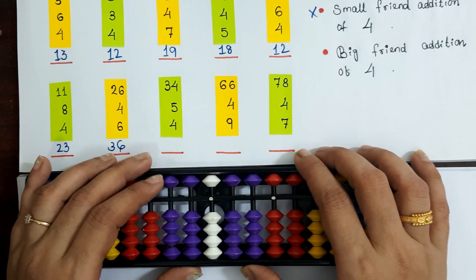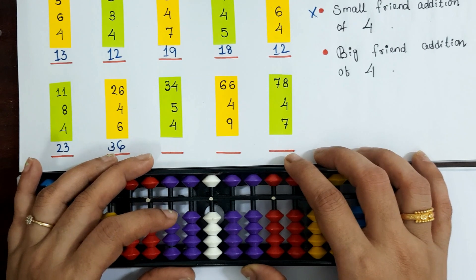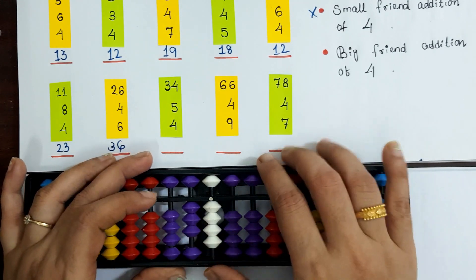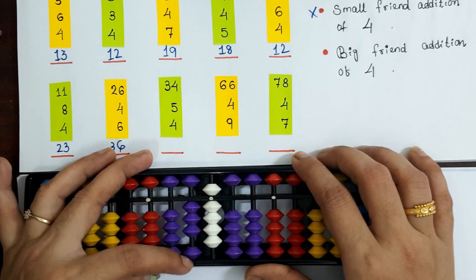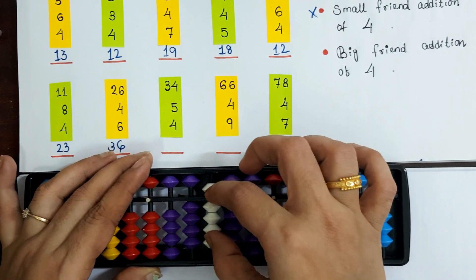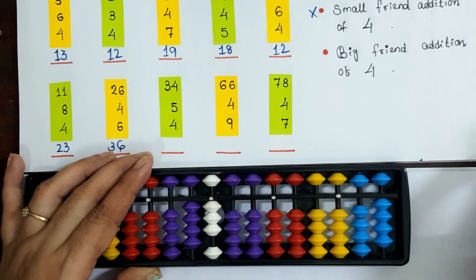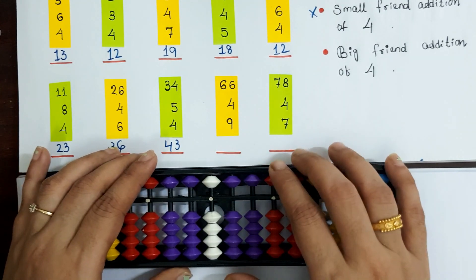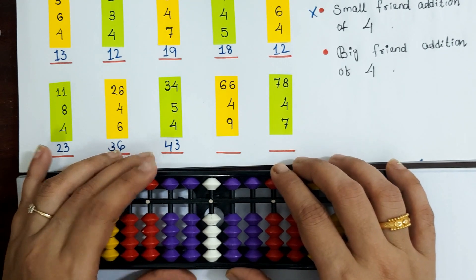Next question: 34 plus 5 plus 4. Using the formula, plus 4 is plus 10 minus 6. Answer is 43.